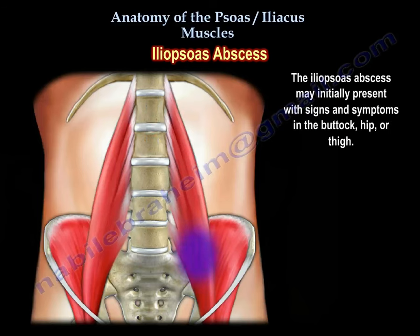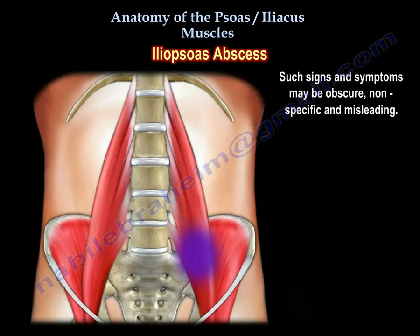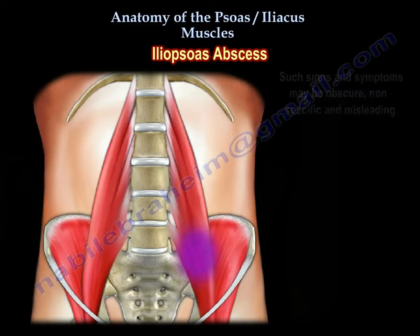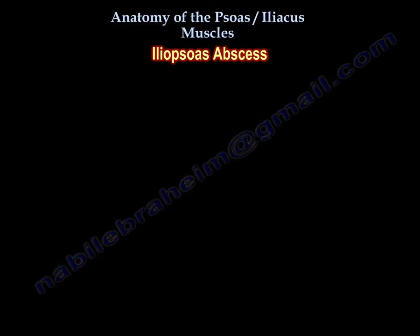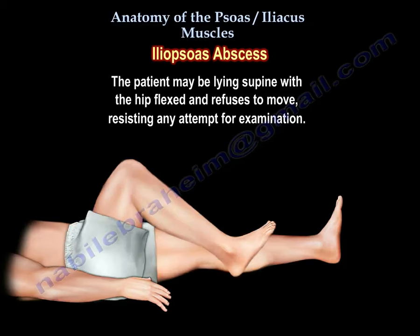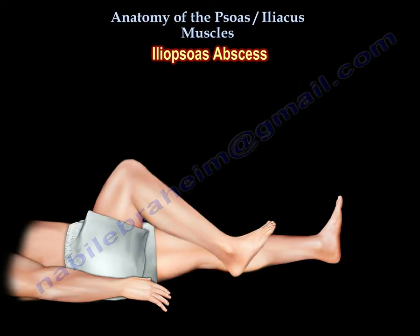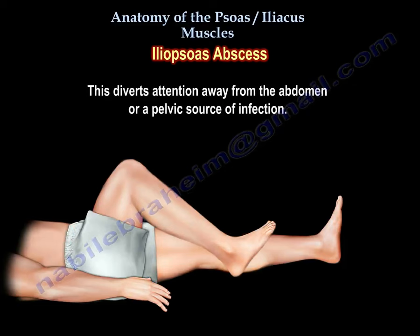The iliopsoas abscess may initially present with signs and symptoms in the buttock, hip, or thigh. Such signs and symptoms may be obscure, non-specific, and misleading. Abscess of the psoas muscle is a diagnostic dilemma that is often overlooked and delayed. With psoas involvement, the hip appears to be flexed with limited and painful range of motion, which diverts attention away from the abdomen or a pelvic source of infection.